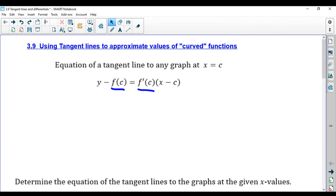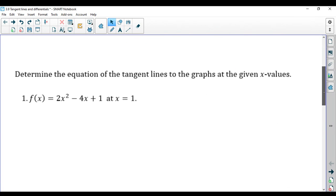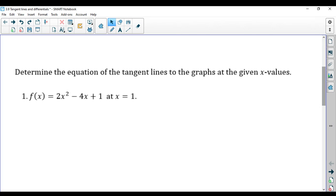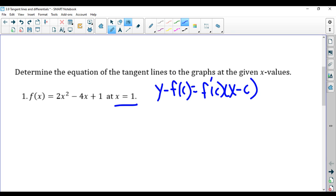So the first example I have for you is this. Determine the equation of a tangent line to these following three problems. And this one says that x equals 1. So we have y minus f of c equals f prime of c times x minus c. C is 1.